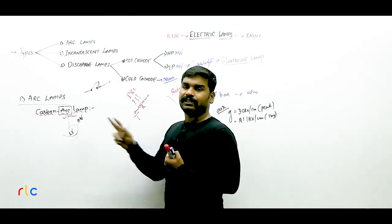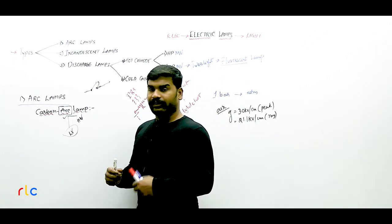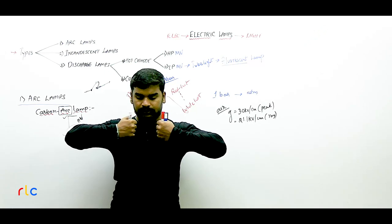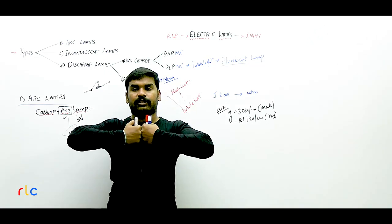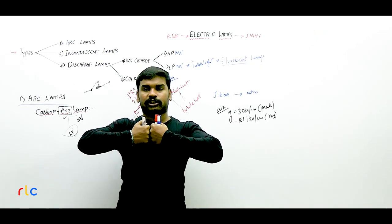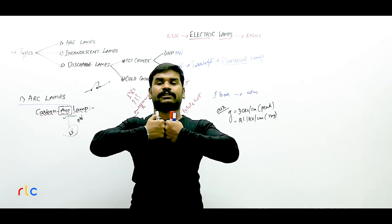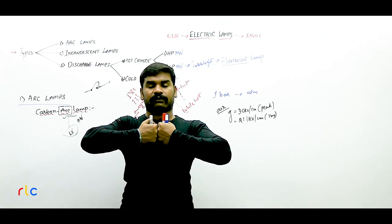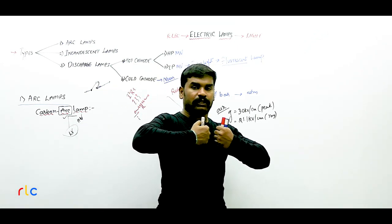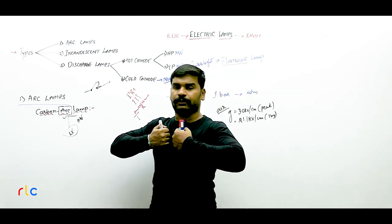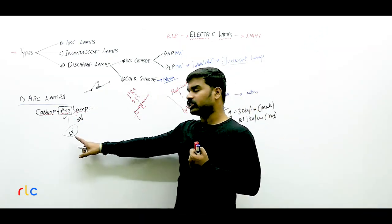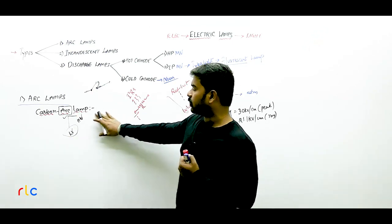In the low voltage method, you take two electrodes and apply a low voltage. Initially you touch the electrodes together, closing the circuit so current starts flowing. Then immediately you pull the electrodes back by a short distance — only three to five millimeters. That's it — immediately an arc is established between them. Carbon arc lamps are based on this low voltage method of arc production.